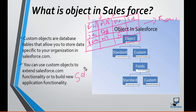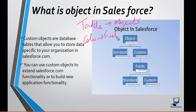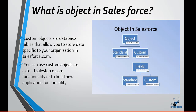In Salesforce, we do not call them as rows and columns. In Salesforce, we call the tables as objects, the columns are called fields, and the rows are called records. So this is the nomenclature we follow in Salesforce: table is called object, columns are called fields, and rows are called records.